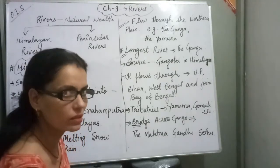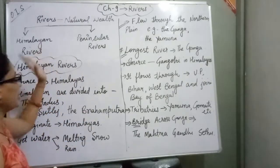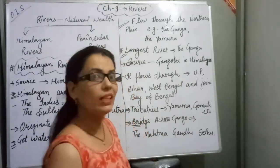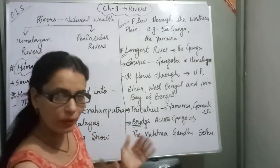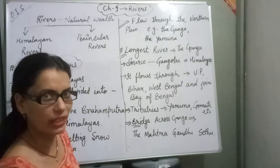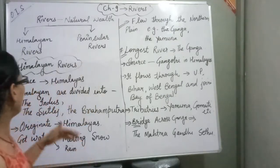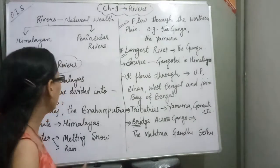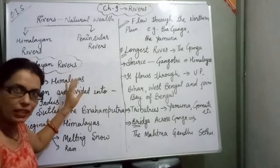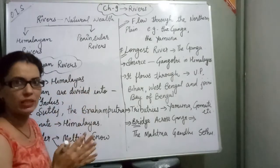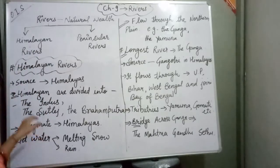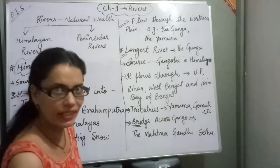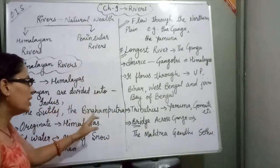Now we will discuss Himalayan rivers. Which is the source of water for the Himalayan rivers? The Himalayan rivers — such as the Indus, the Sutlej, and the Brahmaputra — we will look at where they originate.